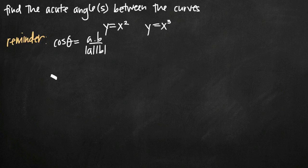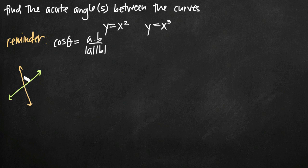The only difference is when we were finding the angle between two lines, it was really easy. If you can picture two lines graphed on an xy coordinate system, we're looking for the acute angle between the lines. It's really easy to represent these lines with vectors and use our corollary formula for cosine of theta. But how do we find the acute angle when we have two curves? It's not just straight lines — it's not as easy as finding the angle between lines.